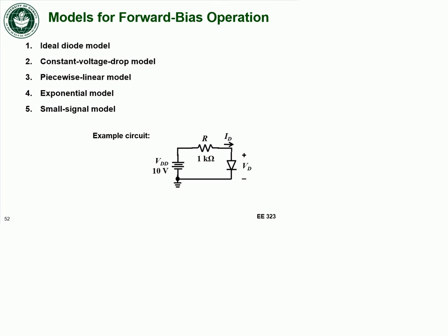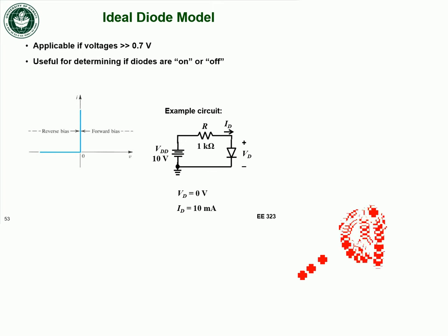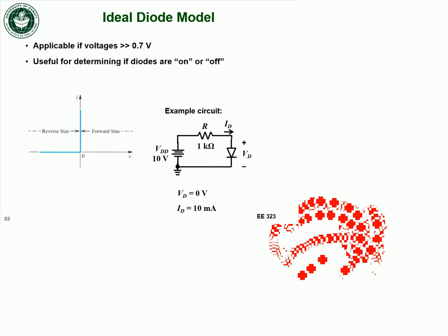We're going to continue our discussion on preferred bias diode models. We talked about the ideal diode model — the diode is either completely on or completely off, and it turns on at zero volts. So if you have even just a slight amount of voltage across it, you can get whatever current you want to flow through the diode. In our example circuit, if the diode is ideal, there's no voltage dropped across it, and the current through the diode is 10 milliamps.